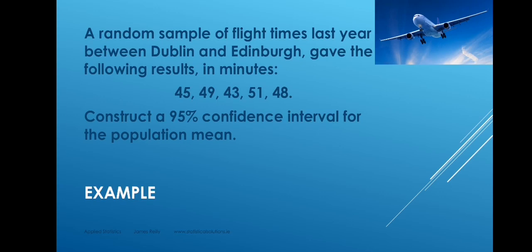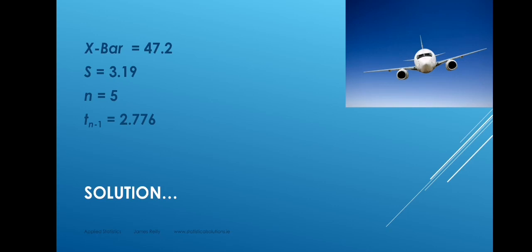We will look up the tables of t to find the appropriate value. So: x bar is 47.2 minutes — you can do this with your calculator in stat mode. S, the sample standard deviation, is 3.19 minutes. N, the sample size, is 5. And t is 2.776. Let me show you how we get that value. Here is a copy of the t-distribution tables.